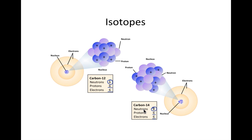And if you change the number of neutrons, you're changing the mass. That number is the mass number. So we've got carbon-12, which weighs 12 AMUs, and carbon-14, which weighs 14 AMUs.